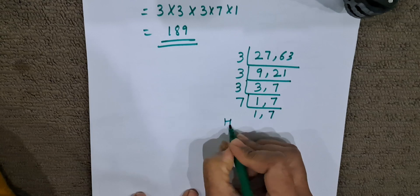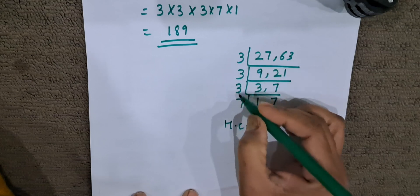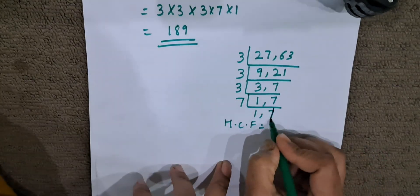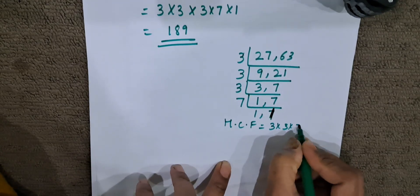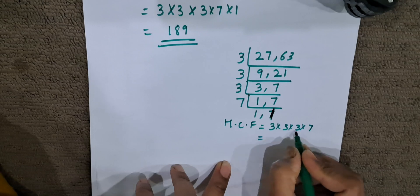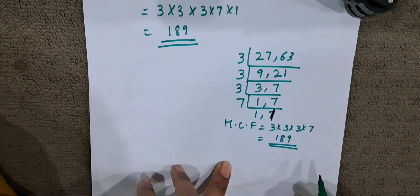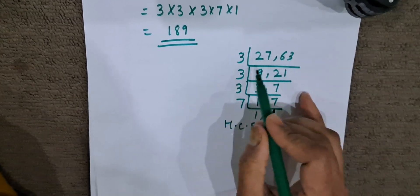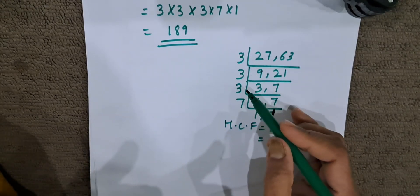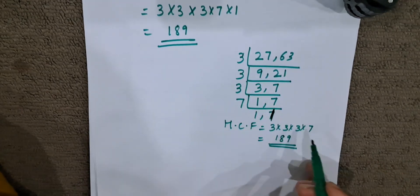So now the highest common factor of 27 and 63 — we will write all the factors: 3 into 3 into 3 into 7. 3 threes are 9, 9 threes are 27, 27 into 7 is 189. So HCF is 189. This is a simple method where we take the numbers and divide by any common numbers. And once the common numbers are not there, we divide the numbers by themselves. Then we get the HCF.